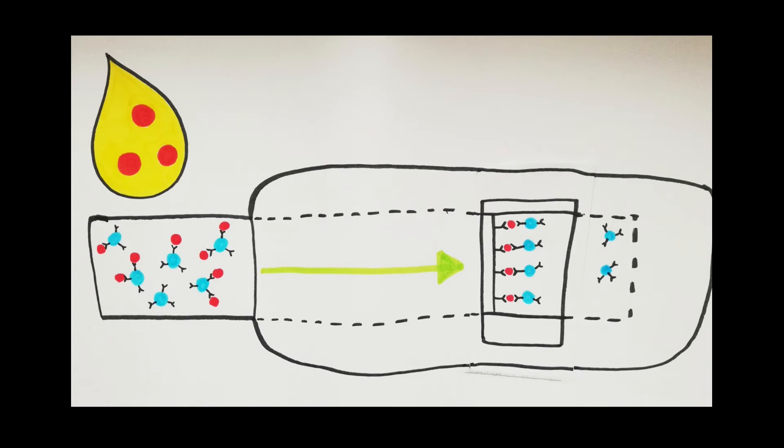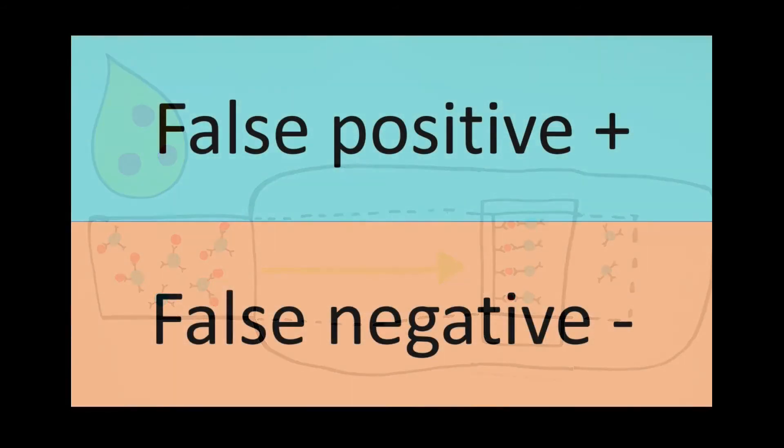Any beads that did not have HCG bound to them will not be stopped at the test window and will keep traveling up the stick and out of sight. So if there's no blue line, it's a negative result. Now over to you.